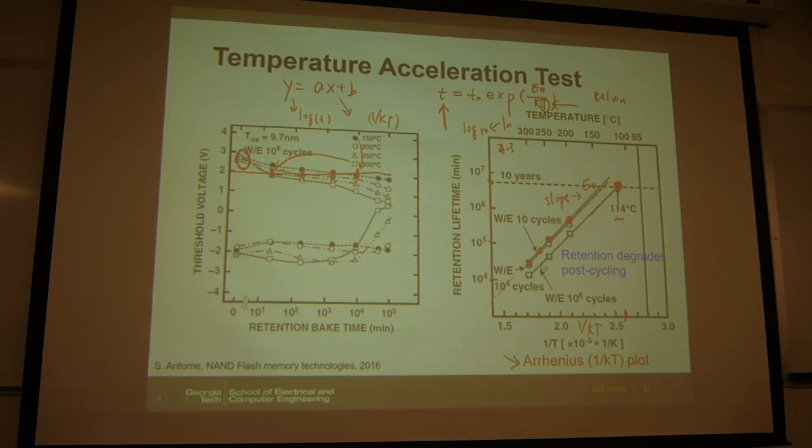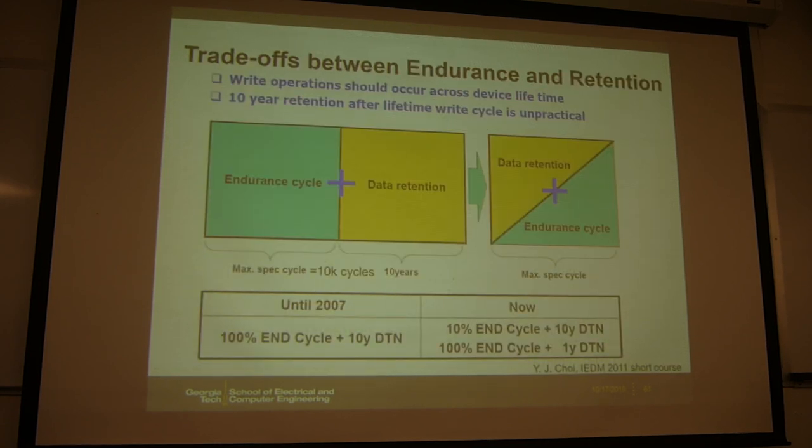So from this data you see that the post-cycling, the retention is worse. That means you can test this retention for the flash cell. That means you are not using it many times. Maybe you just write the cell for one time or two times. Then you test the retention. It will be better than, let's say, the cell you have programmed for 10 to the power 4 cycles, 10 to the power 5 cycles. This is because the trap we discussed before. After you cycle the device many times, you will generate those traps in the tunneling oxide. And that will help the electrons coming out from the floating gates.